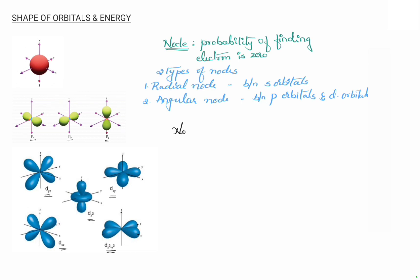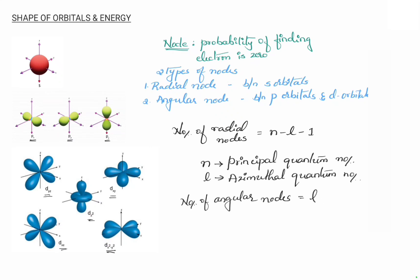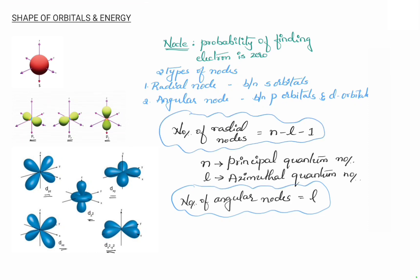The number of radial nodes can be calculated by n minus l minus 1, where n is the principal quantum number and l is the azimuthal quantum number. The number of angular nodes is equal to l, and the number of radial nodes is n minus l minus 1.